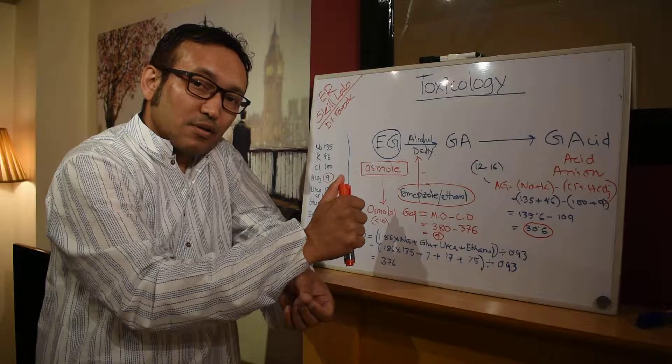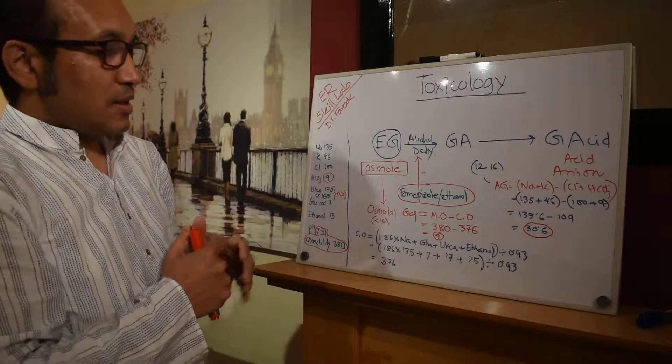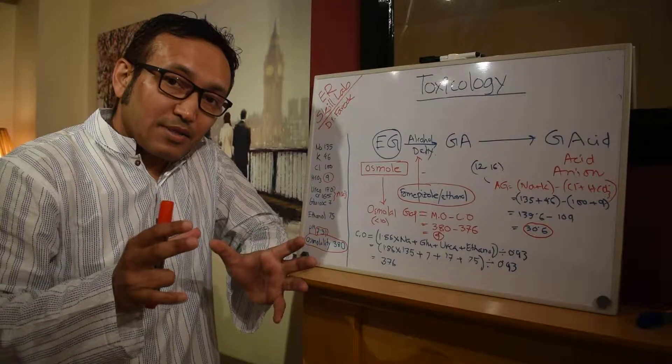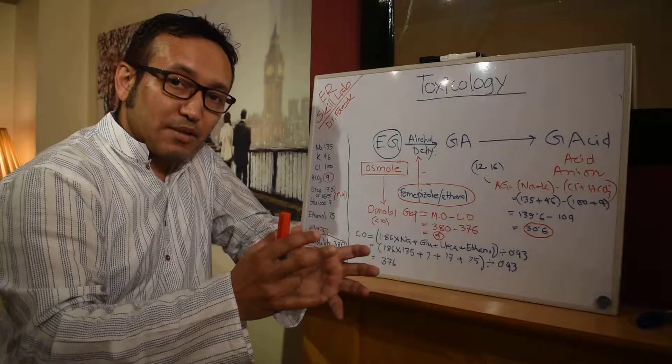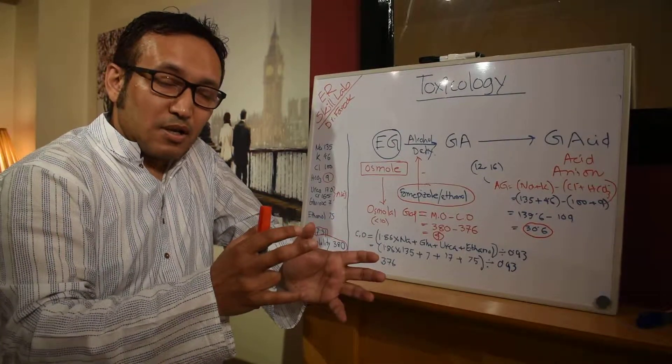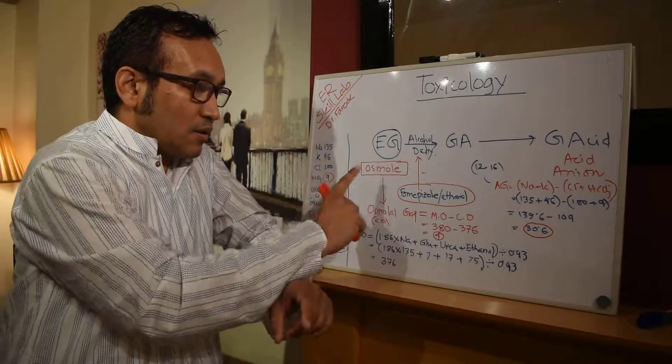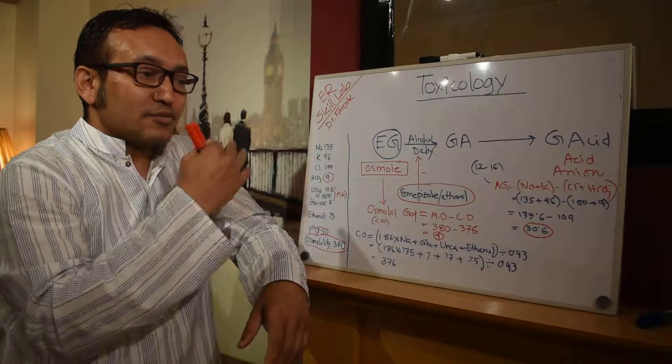You got my point. So again what we learn from here is we can apply this on methanol as well. To just summarize, any toxic alcohol poisoning we need to know the immediate treatment, maybe an antidote. Then we need to calculate two things: osmolal gap and anion gap. And then we decide what is the final treatment.